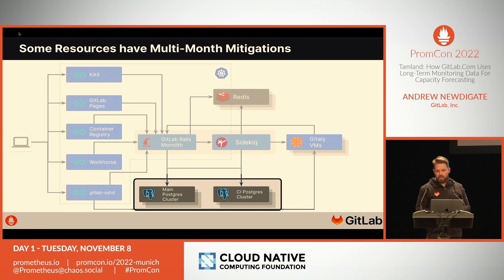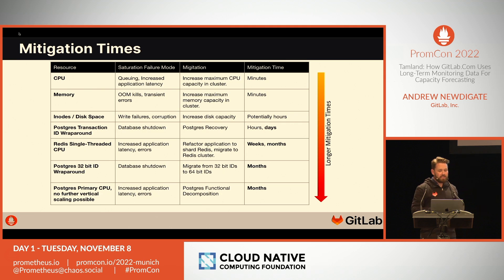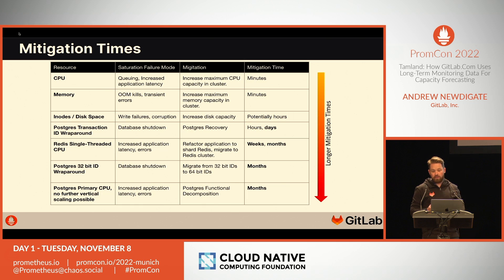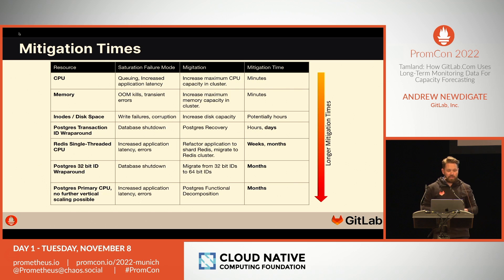In some cases, the low impact of saturation or ease of mitigation means we don't need to prioritize those resources. However, many other resources, once they've hit saturation, have mitigation times stretching from days to weeks or even months. If one of these resources unexpectedly becomes saturated, it could have a detrimental impact on availability for an extended period — causing latency issues or complete application failure. For example, in the case of a Postgres transaction ID wraparound event, reaching saturation will automatically shut the database down and a disaster recovery operation will need to take place.